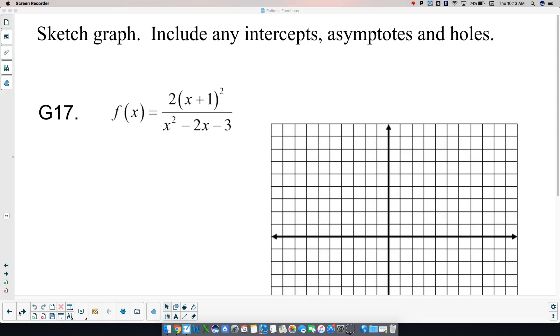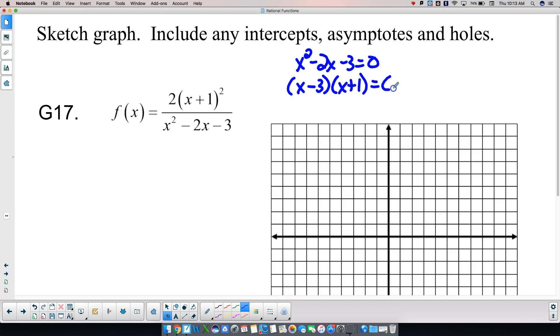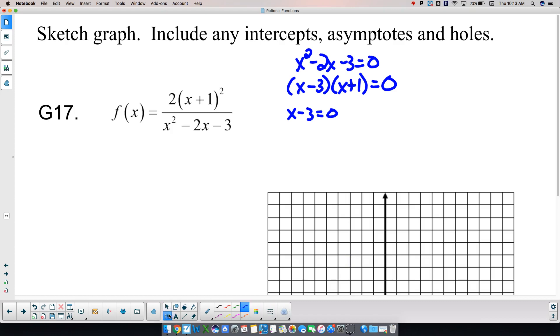All right, so first step, I set my denominator equal to 0. That factors to be x minus 3 and x plus 1, which then gives me x minus 3 equals 0, which means x is equal to 3, and x plus 1 equals 0, which means x is equal to negative 1. So my domain is all real numbers, but x cannot be equal to negative 1 or positive 3.